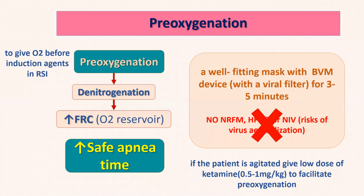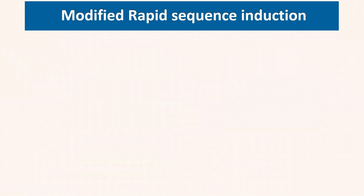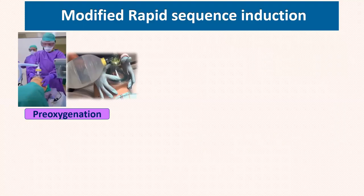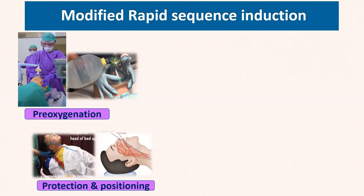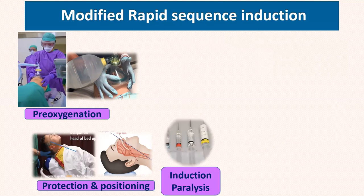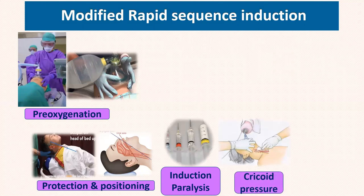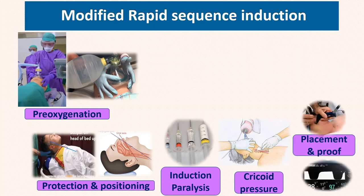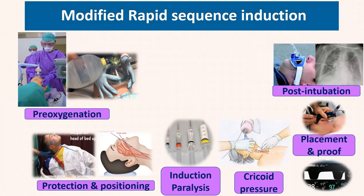If the patient is agitated, you can give a low dose of ketamine — 0.5 to 1 mg/kg — to facilitate pre-oxygenation. This is sometimes called delayed sequence induction. Modified rapid sequence induction involves giving a sedative or hypnotic first, immediately followed by a rapid muscle relaxant, so the patient is relaxed and ready for intubation in a short time of about 60 seconds. Then pre-oxygenate, position the patient, give induction medication and muscle relaxant, apply cricoid pressure to prevent aspiration as an option, then confirm tube position and secure, followed by chest X-ray.